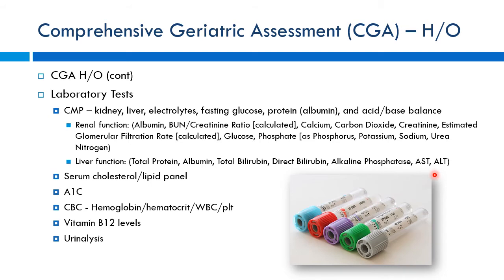Liver function — total protein, albumin, ALT, AST — gives an idea of how well the liver is functioning. Patients may develop chronic issues like cirrhosis or hepatitis. Cholesterol is important for cardiovascular risk. A1C checks average blood sugar over a three-month period, important for diabetic patients. CBC can reveal anemia as a sign of poor nutrition. B12 levels matter because deficiency can also cause anemia. Urinalysis can indicate kidney function issues like protein or sugar spilling.